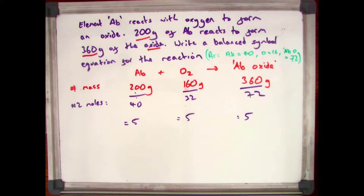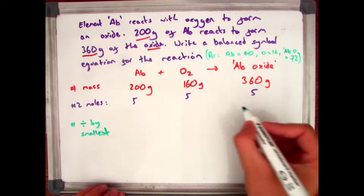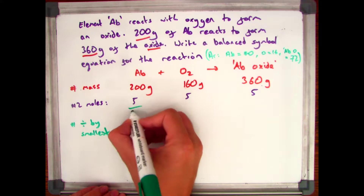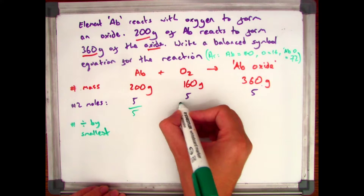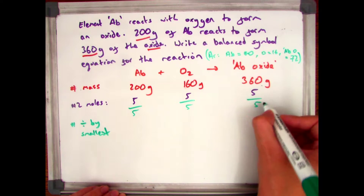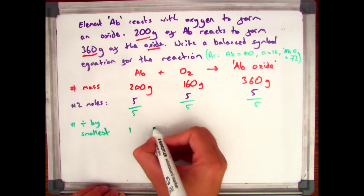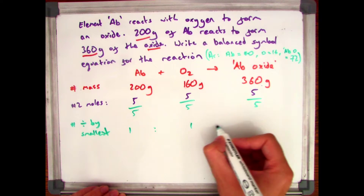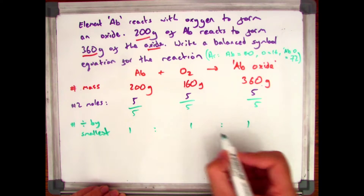Step 3 is to divide all of them by the smallest, which in this case they're all 5, so they're all the smallest. Dividing each by 5 gives me a ratio of 1 to 1 to 1.